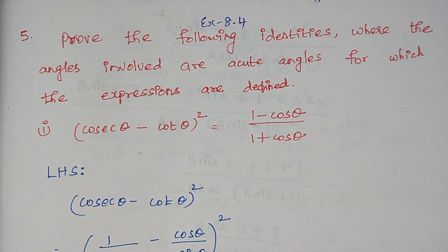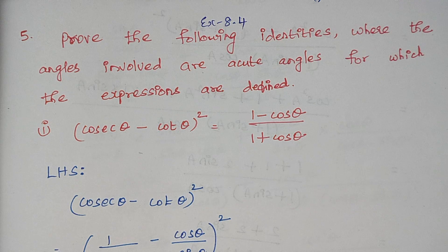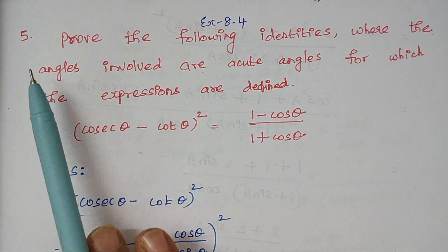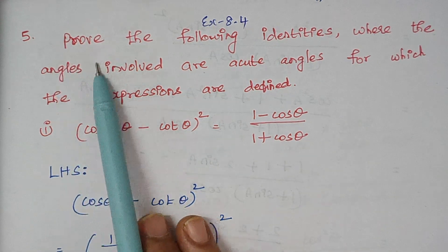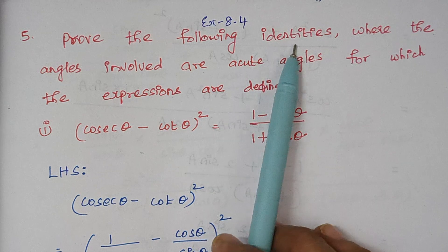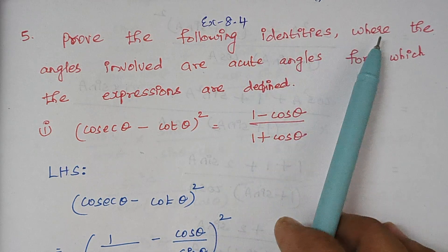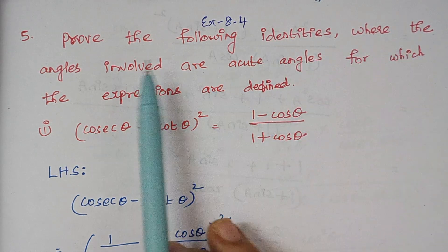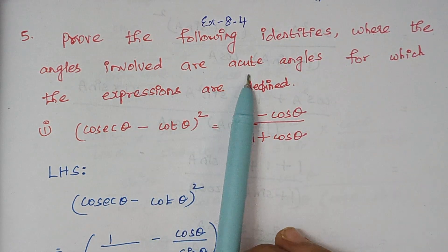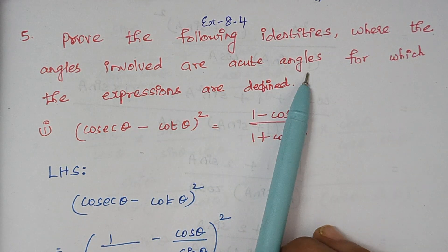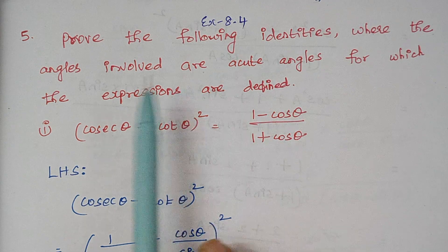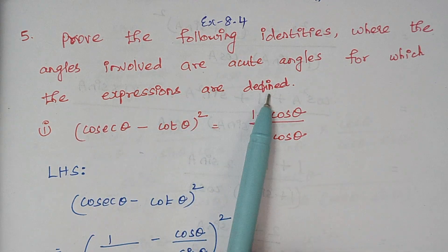Hello viewers, I am Kousalia. Today we are going to solve problems under exercise 8.4, problem number 5: prove the following identities where the angles involved are acute angles for which the expressions are defined.